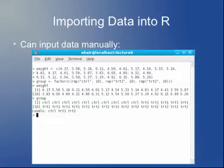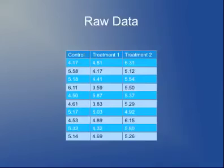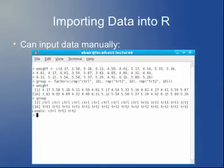We also want to enter this group variable to specify whether it's control, treatment 1, or treatment 2. In principle I could use c() and type control ten times, then treatment 1 ten times, and so on. But if you don't want to type 'control' ten times, there's this R command rep(), which stands for repeat.